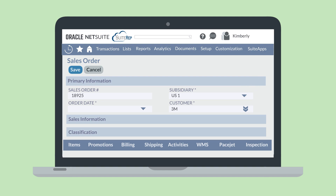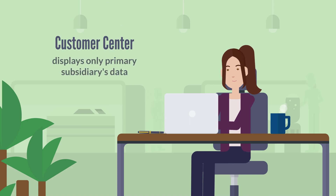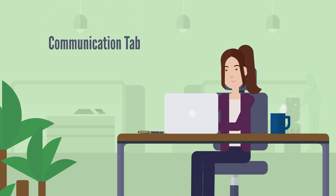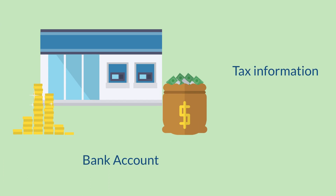If you use the NetSuite Multi-Subsidiary Customer feature, then there are some specialized situations you should be aware of. There are several scenarios where secondary subsidiaries and their related information will not appear. For example, the customer center displays only the primary subsidiary's data on each customer. Similarly, only primary subsidiary information will appear on the communication tab on customer records. And each customer's bank account and tax information will be tied to the primary subsidiary.